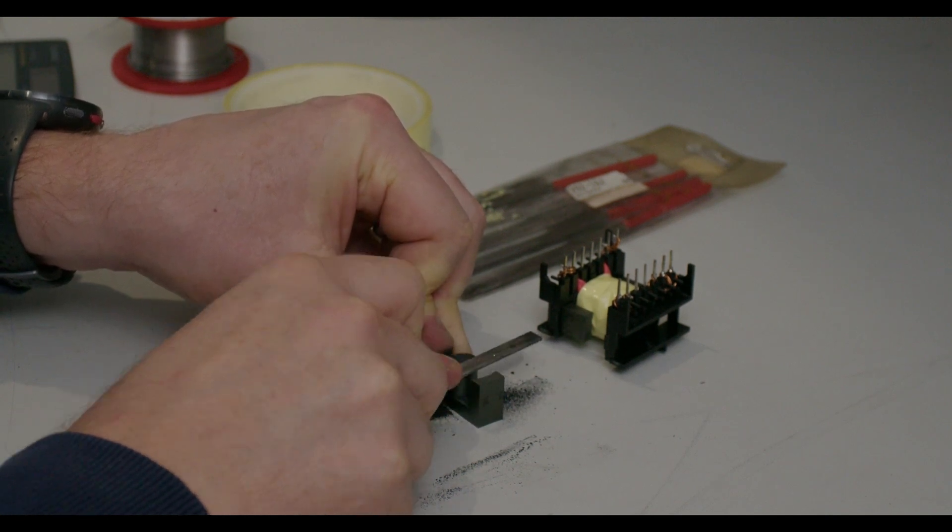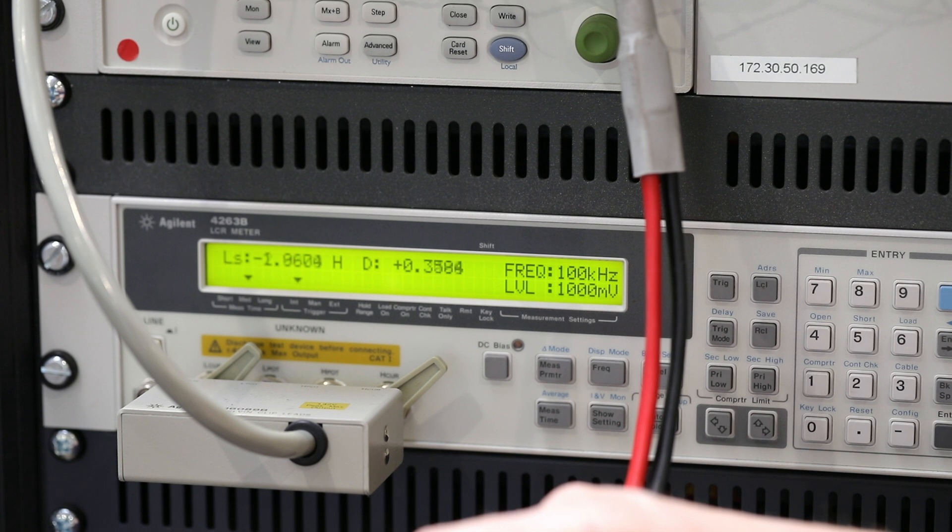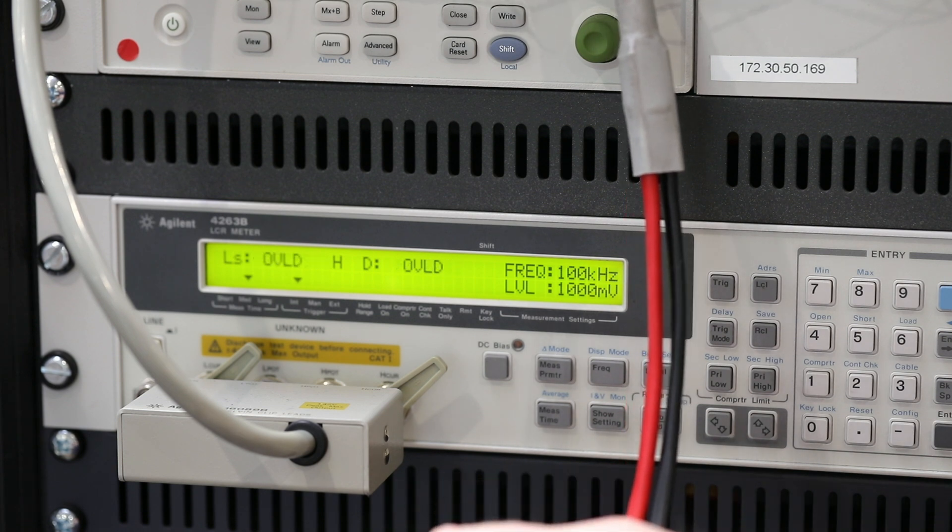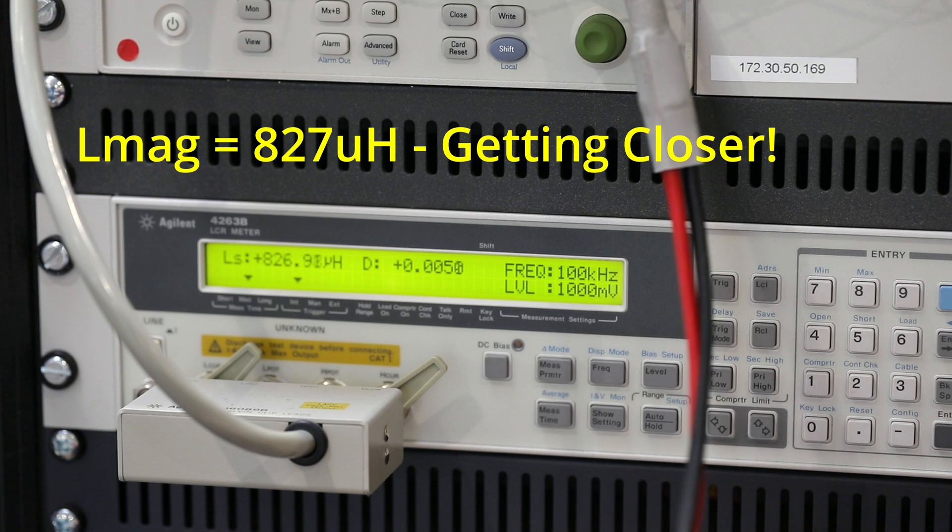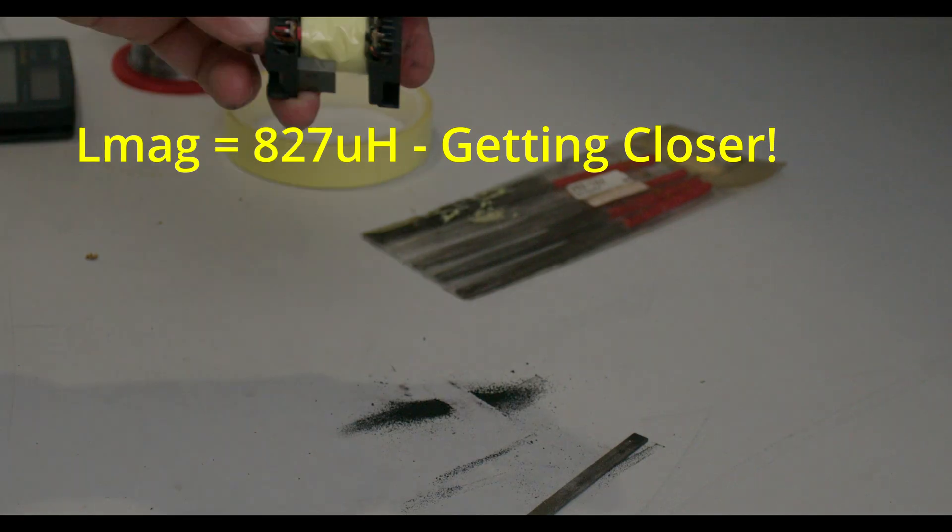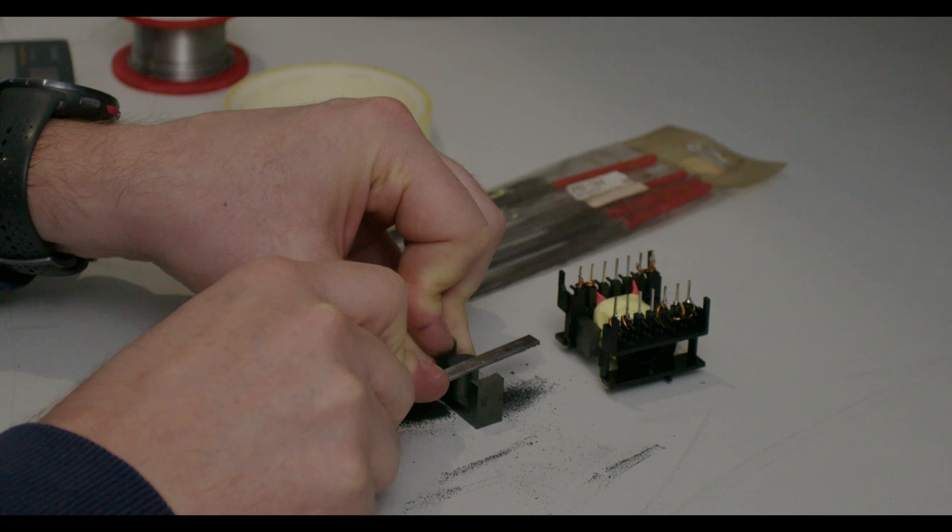We actually need to set the gap to give the required primary magnetising inductance of 700 microhenries with a tolerance of plus and minus 10%. Our calculations indicate this should be around 0.24mm, so we remove ferrite material a little at a time and measure using the impedance bridge to see if we are close enough.